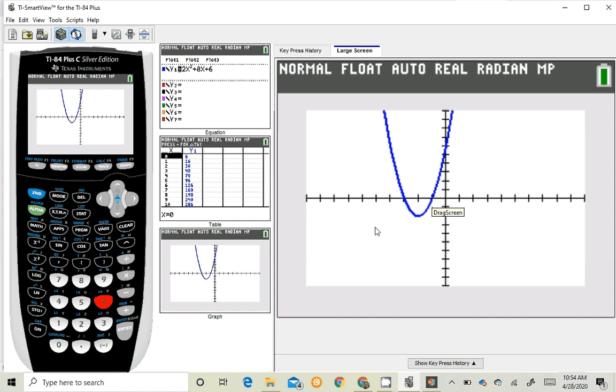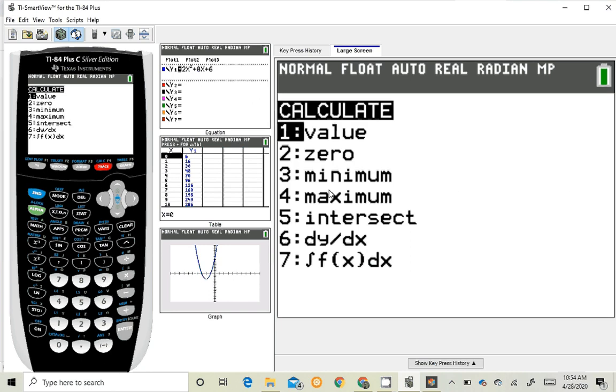We're going to start with the factored form. So we've got our standard form now. Now we're going to create the factored form by finding the zeros, the R1, R2, our roots. And to do that, I'm going to hit the second button and the trace button in the upper right, which gives me this calculate menu. And I'm going to want number 2, 0. So I select that.